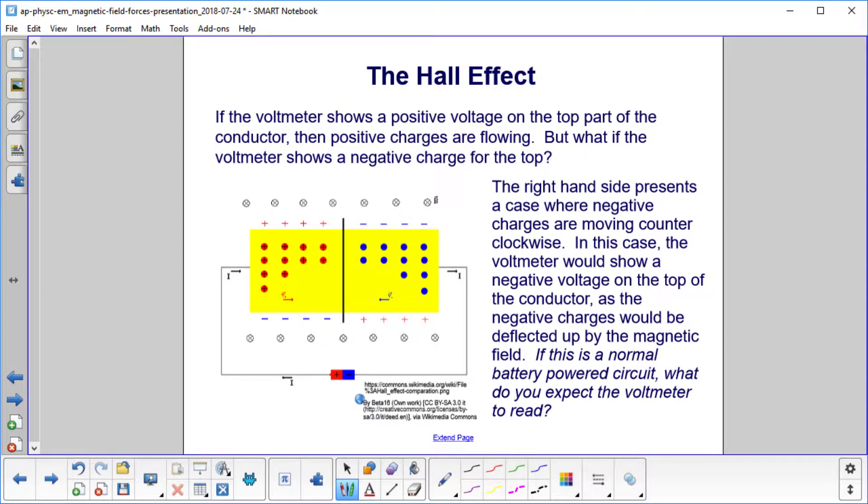If positive charges were moving, we would have a positive voltage on this side. So when we measured it with the voltmeter, that would be our positive side. That would indicate that conventional current is actually reality. We would actually have positive charges moving this way.